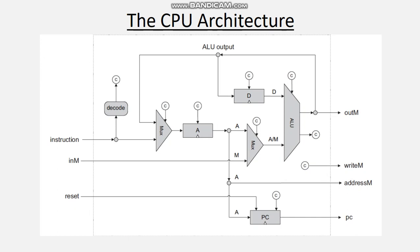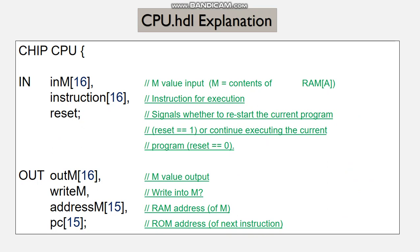Now let's implement the HDL code of the CPU. I'll be explaining the HDL code for the CPU provided in the task resources in parts. Here we have the header section specifying the CPU interface, which consists of the chip name and the names of the input and output pins. The chip name will obviously be CPU. The input pins will be named as 16-bit inM, 16-bit instruction, and reset, while the output pins will be named as 16-bit outM, writeM, 15-bit addressM, and 15-bit PC.